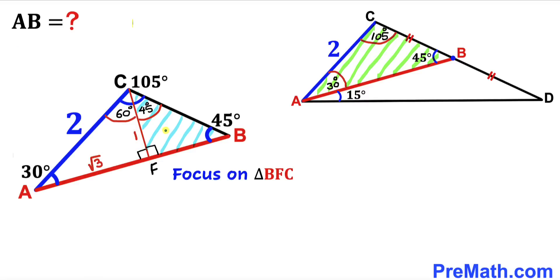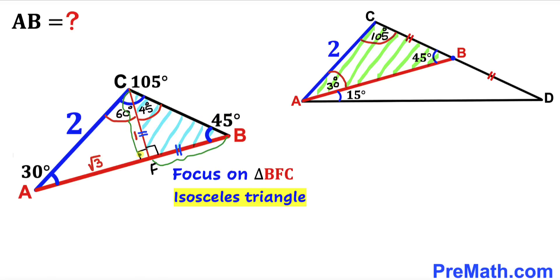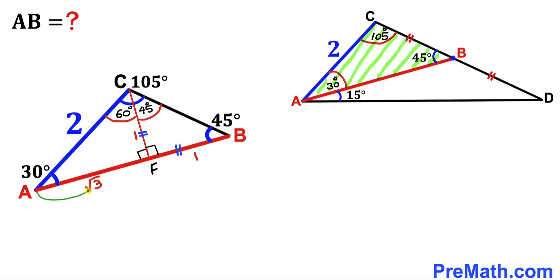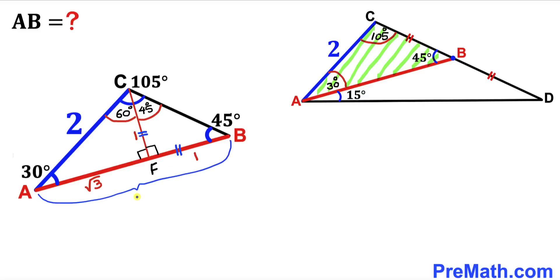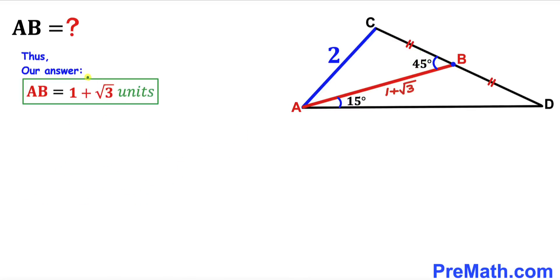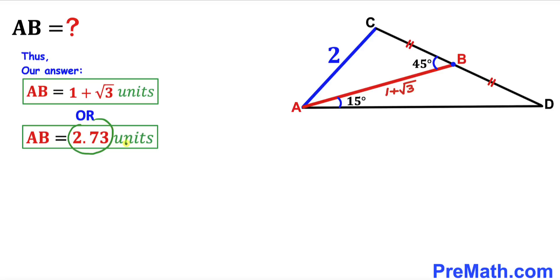Finally, let's focus on triangle BFC. This is an isosceles triangle since this angle is 45 degrees and this angle is 45 degrees as well. So therefore side length BF must be equal to side length CF. Since CF is 1, BF is going to be 1 unit as well. Therefore AF is square root of three and FB is 1, so this whole side length AB has got to be 1 plus square root of three. Thus AB turns out to be 1 plus square root of three units, which can also be written as approximately 2.73 units. Thanks for watching and please don't forget to subscribe.